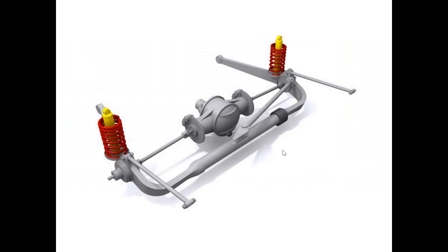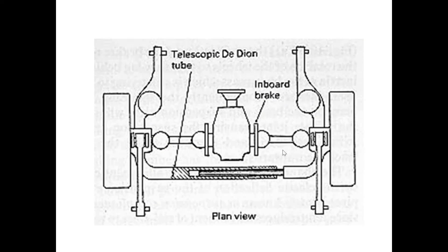This is the next class: hydrogen suspension system — hydro-pneumatic height correction suspension system. That is found in Citroën. This is the next topic and the complete module. Look at the summary stream. Thank you.